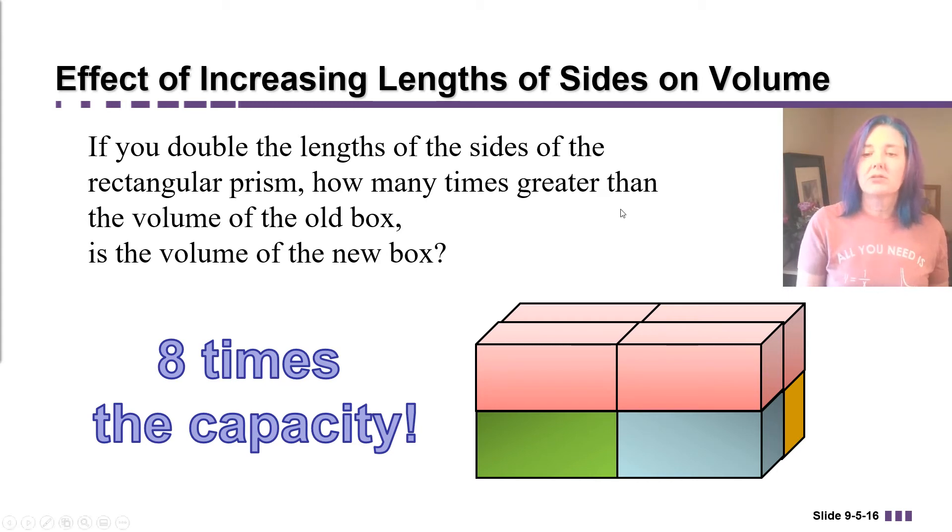It kind of makes sense too if you think about the volume formula. Because in our volume formula, let's suppose that we had a box that had a length, a width, and a height of just one. So the volume would be one times one times one.